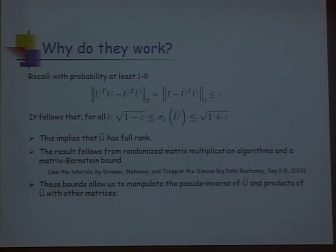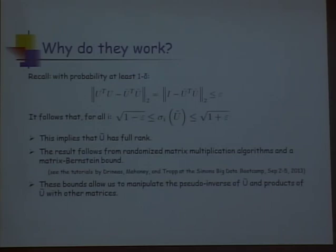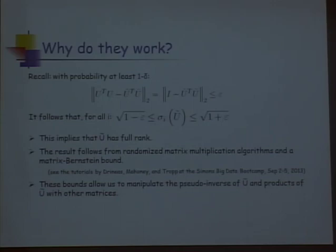This used to be a fairly hard result to prove, but recently with enormous progress on matrix Chernoff and matrix Bernstein bounds, it's a very simple application of such bounds. Joel Tropp gave tutorials on matrix Chernoff and Bernstein inequalities during the bootcamp. At the end of the day, this allows us to manipulate the pseudo-inverse of Ũ, because Ũ being approximately orthogonal means its pseudo-inverse behaves like its transpose — making the downstream linear algebra much easier.